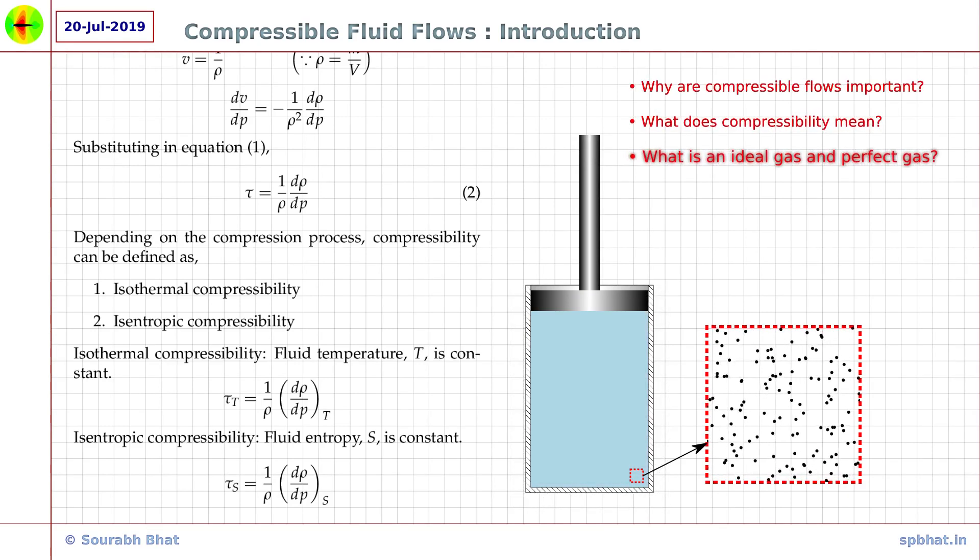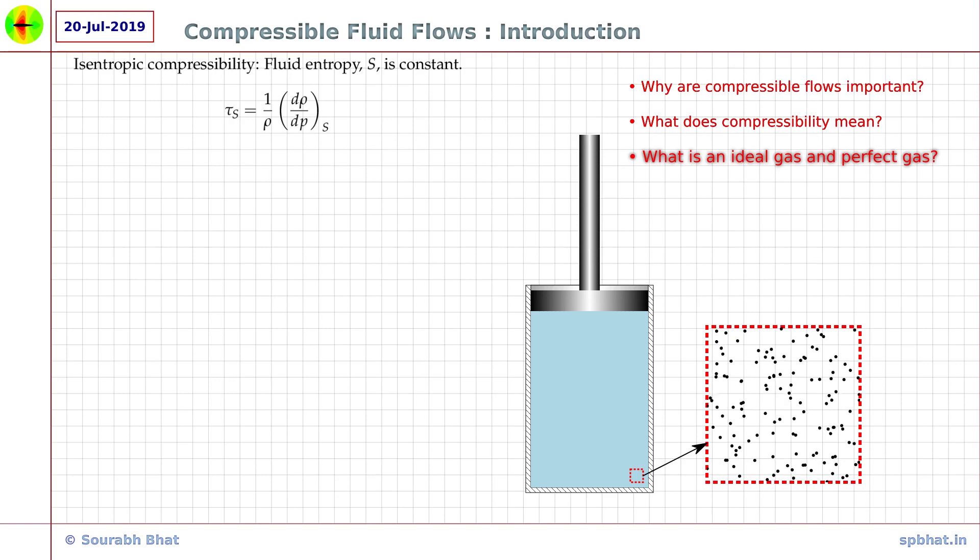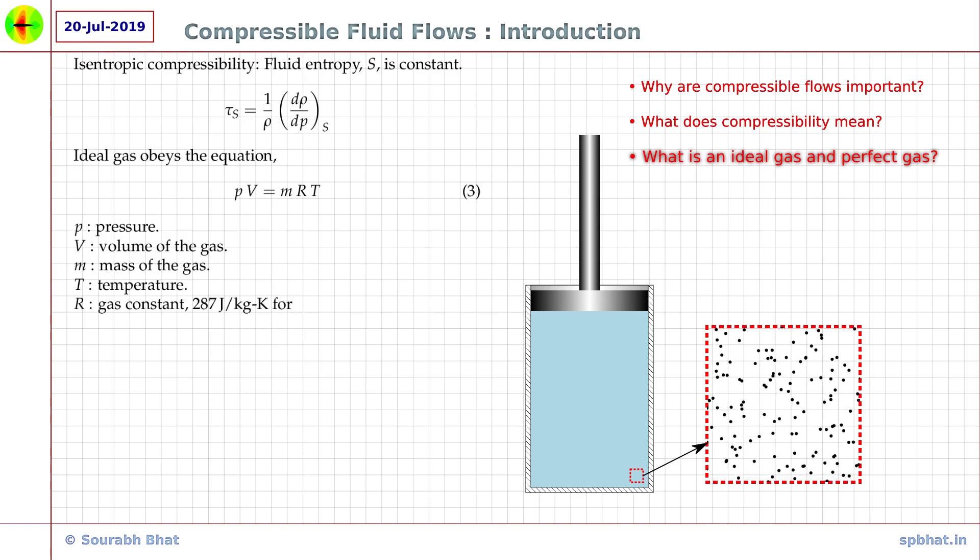In our future tutorials, I am going to use the terms ideal gas and perfect gas a lot and sometimes interchangeably. So, let us understand these words little better. An ideal gas is the one which follows the equation of state PV is equal to MRT, where P is the pressure, V is the volume of the fluid like the volume inside the cylinder, M is the mass of the gas like the mass of the gas inside the cylinder, and T is the temperature.